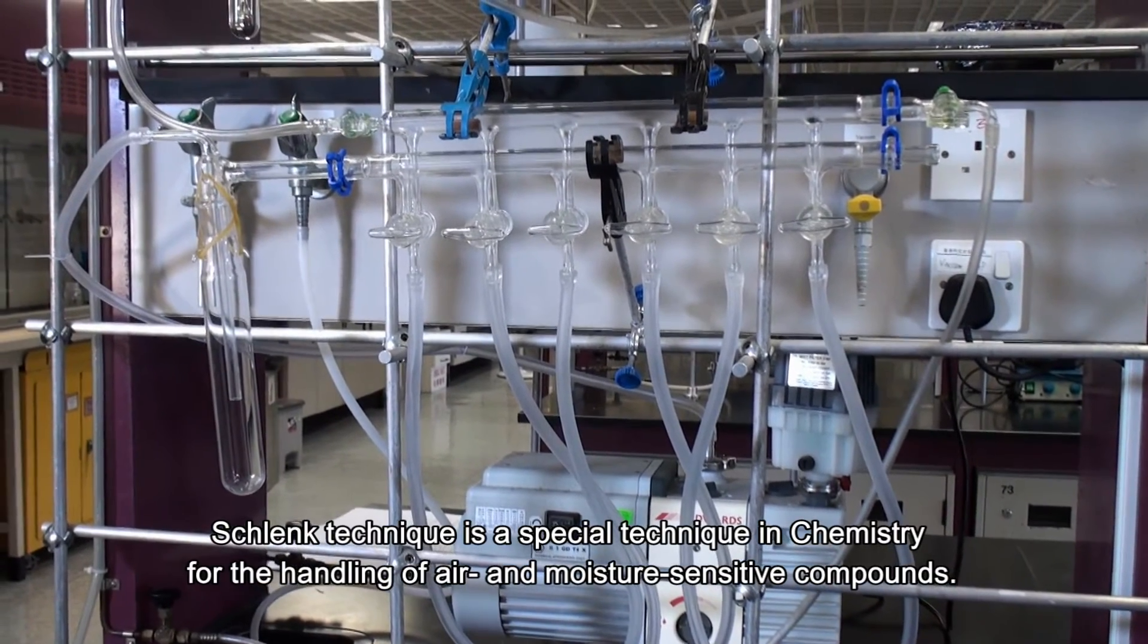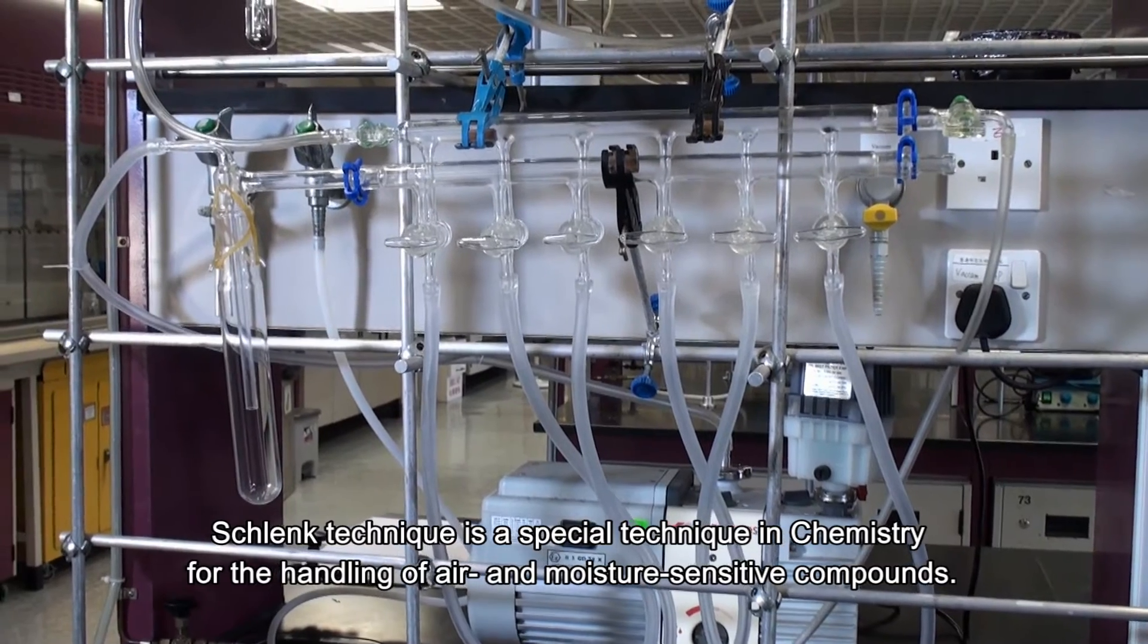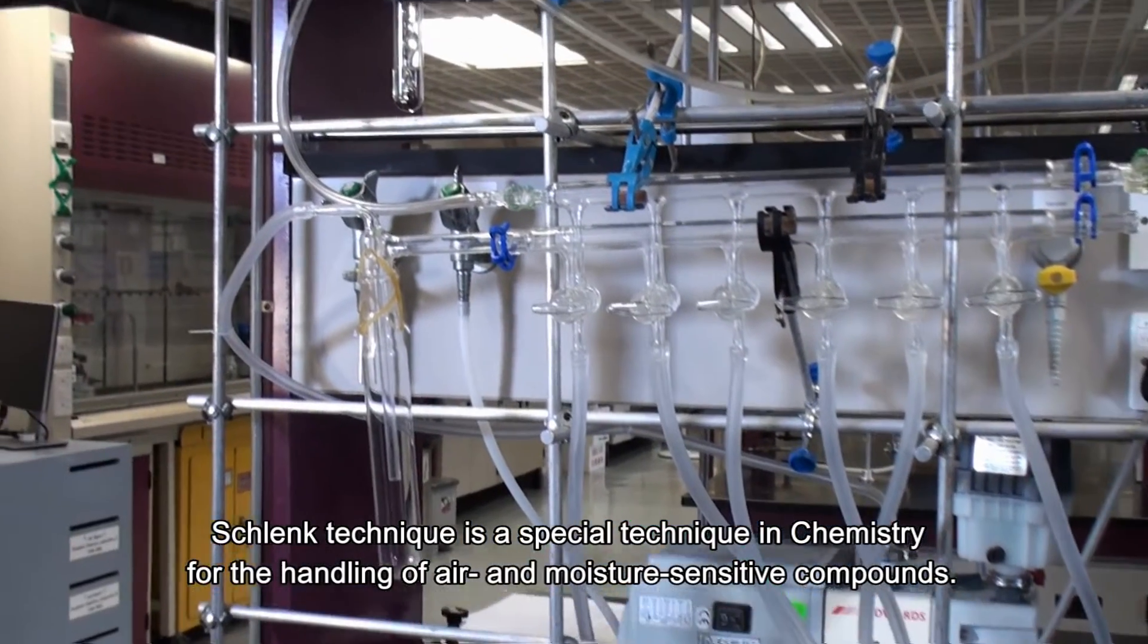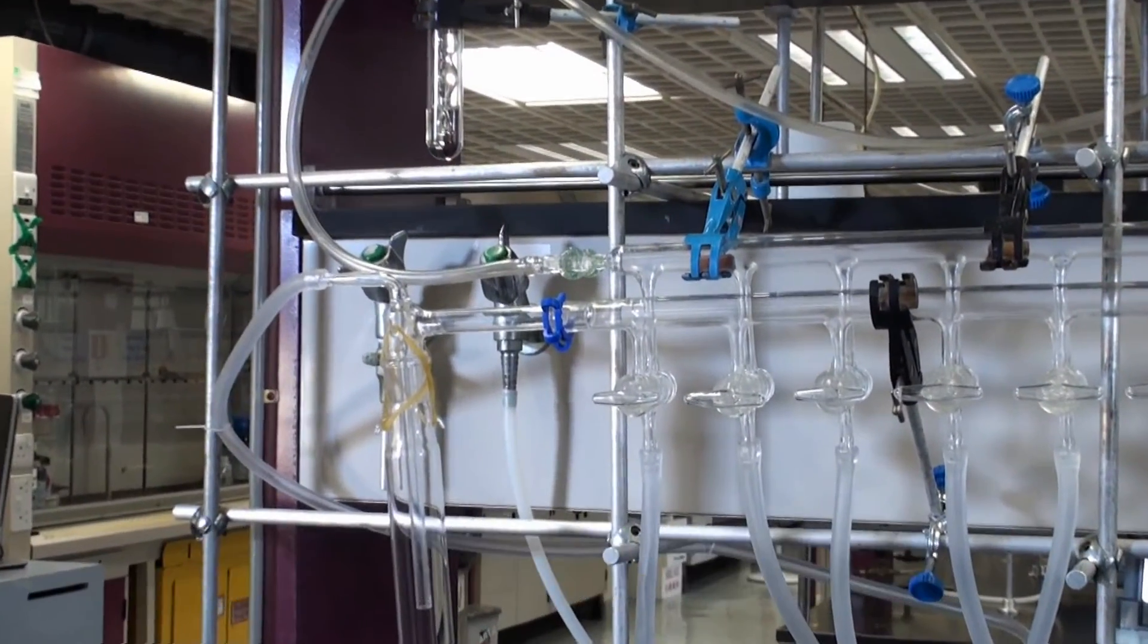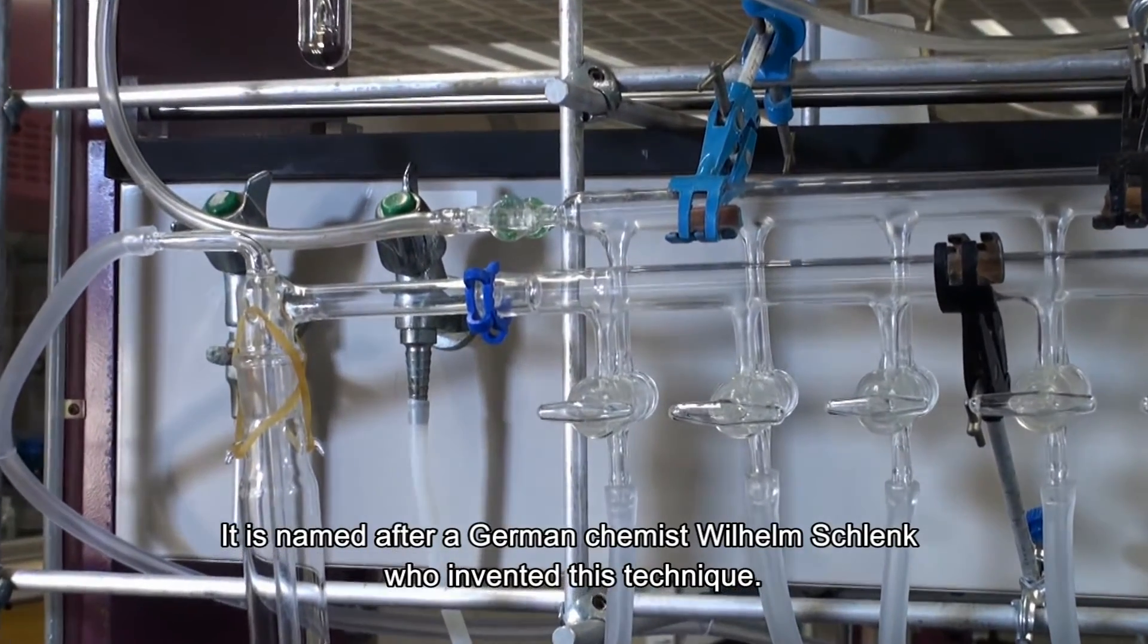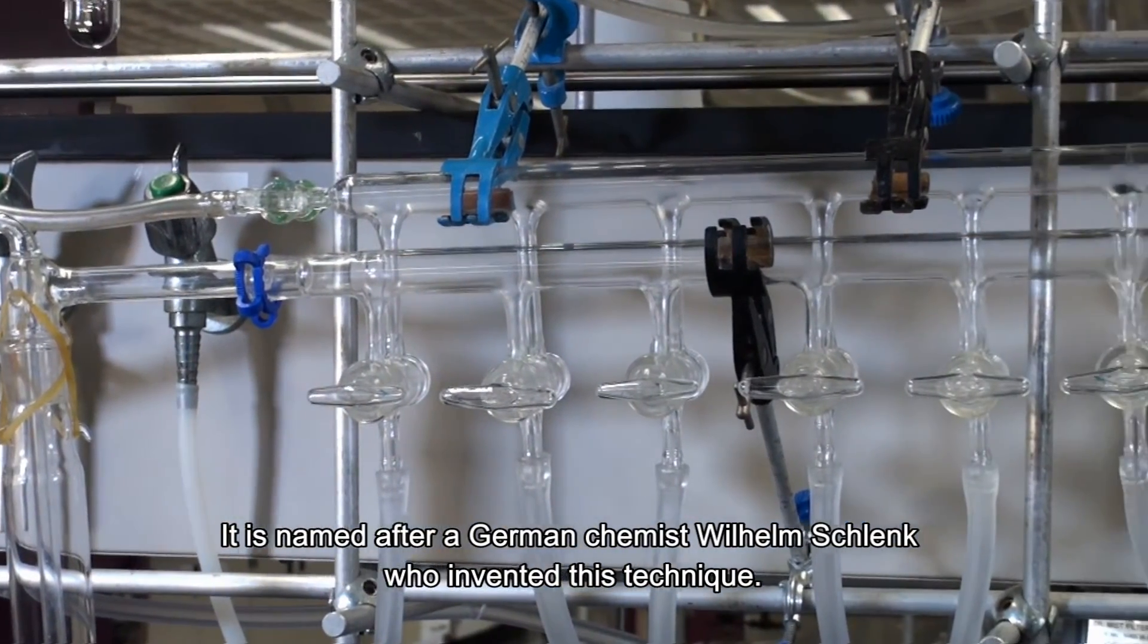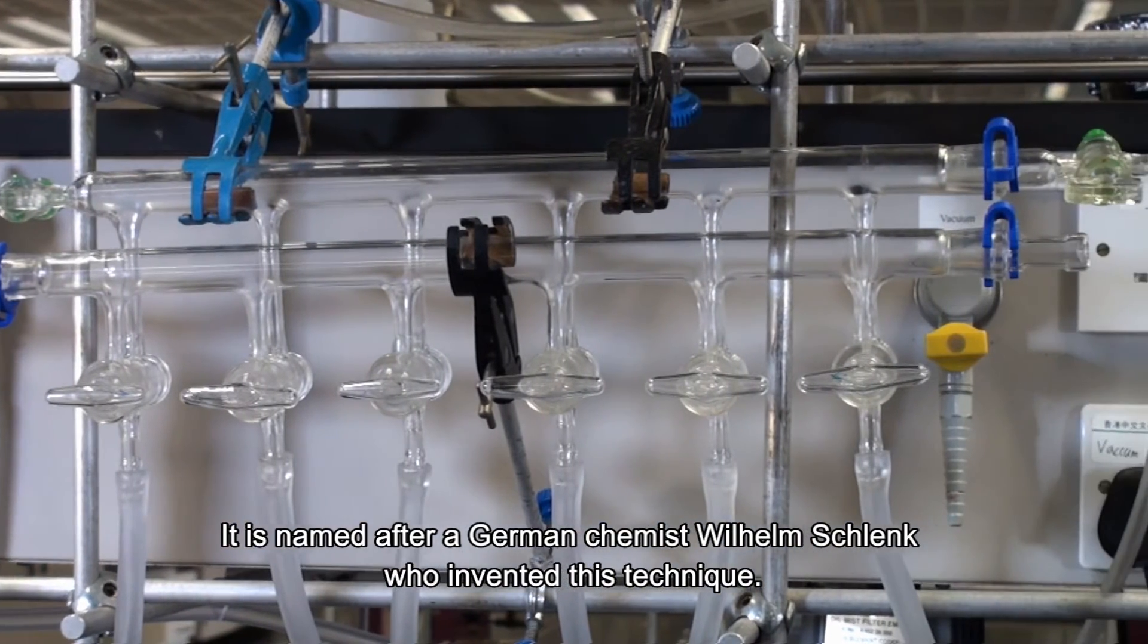Schlenk technique is a special technique in chemistry for the handling of air and moisture-sensitive compounds. It is named after a German chemist, Wilhelm Schlenk, who invented this technique.